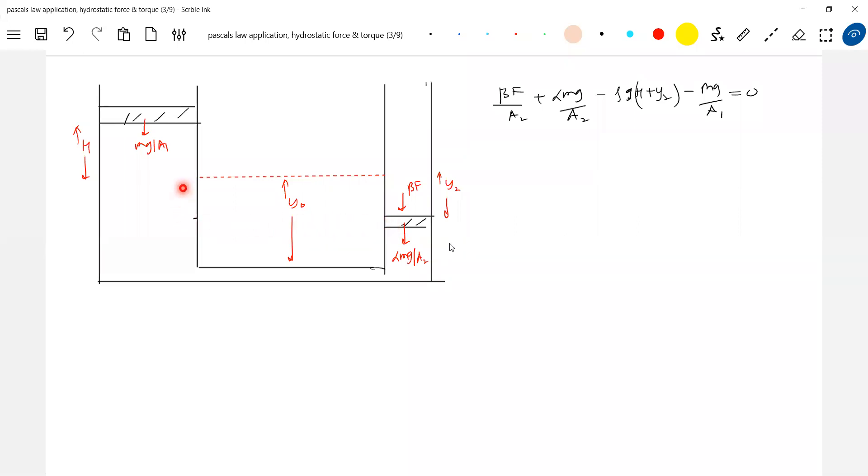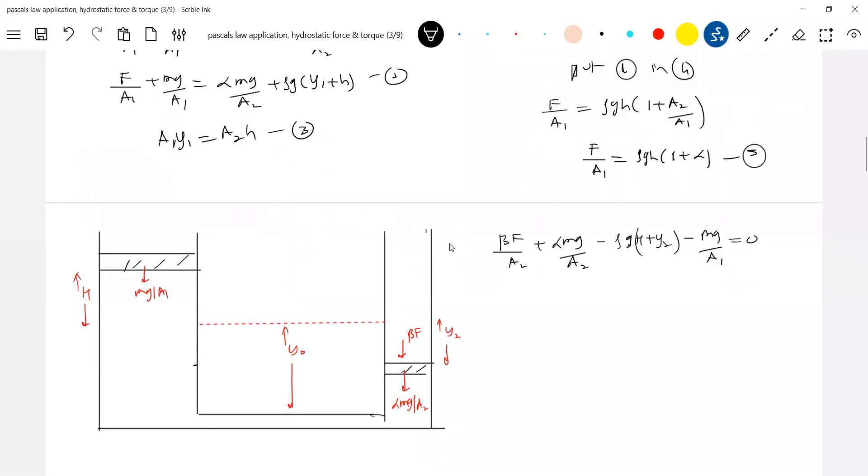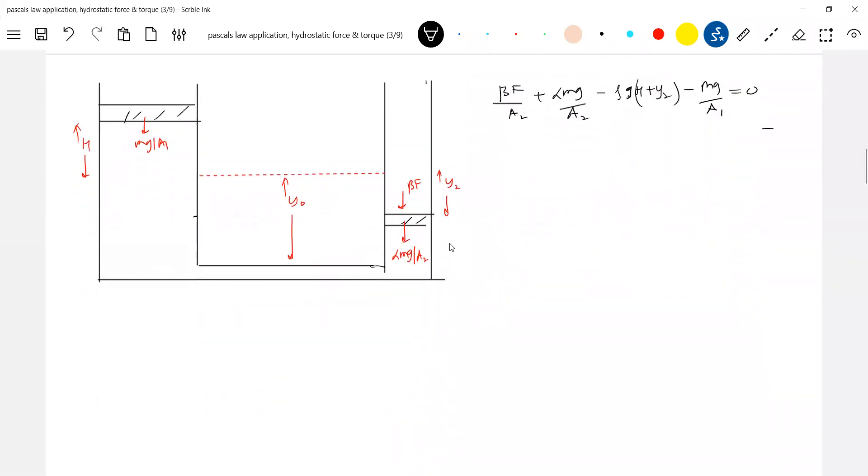The gauge pressure at this point, beta F by A2 plus alpha Mg by A2 here. Then I'll slide up. So then what is the height? H plus Y2 is this one. So minus Rho G H plus Y2. What is the gauge pressure at this point? Mg by A1. So again, what is the thing? The Y2 is an unknown thing. So the volume of this part of the liquid has appeared here. So here A2 Y2 should be equal to A1H. Okay, replace Y2. Put 7 in 6 and solve it. We will get expression for this one.